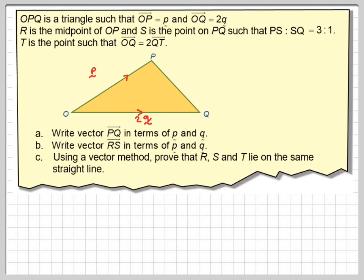R is the midpoint of OP, so we'll put that on there. So this is a ratio of 1 to 1. And S is the point on PQ such that PS to SQ is in the ratio of 3 to 1.